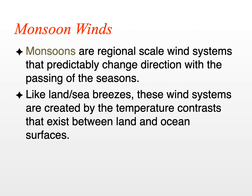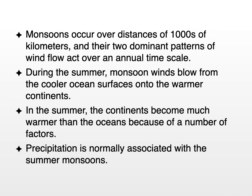Let's now talk about monsoon winds. Monsoon winds are very similar to sea and land breeze, but on an annual basis. Monsoons are regional-scale wind systems that develop because of the changing seasons, and they are predictable, occurring almost every year. Like land and sea breezes, these wind systems are created by the temperature contrast between the land — in Southeast Asia or India — and the Indian Ocean below those areas. Monsoons occur over distances of thousands of kilometers. In fact, monsoons occur in South America, North America, Southeast Asia, and India.